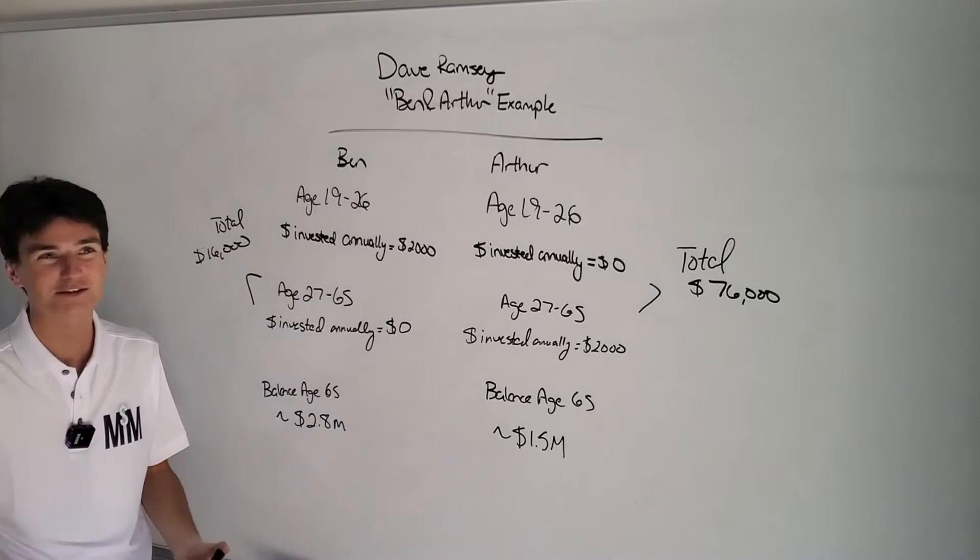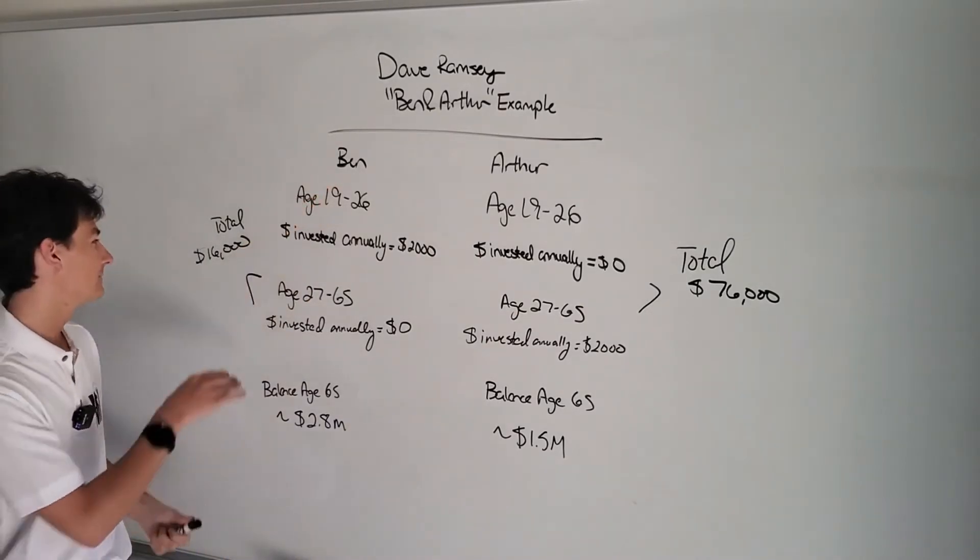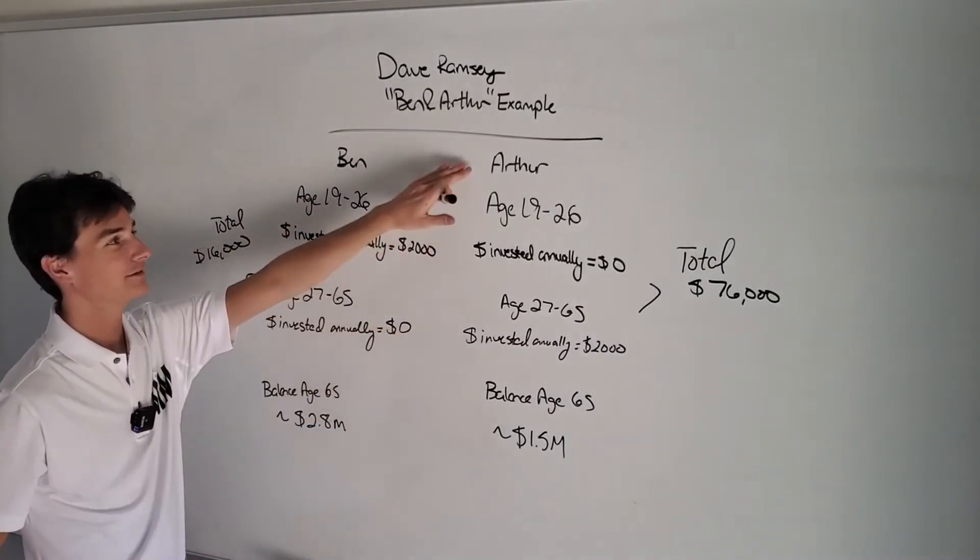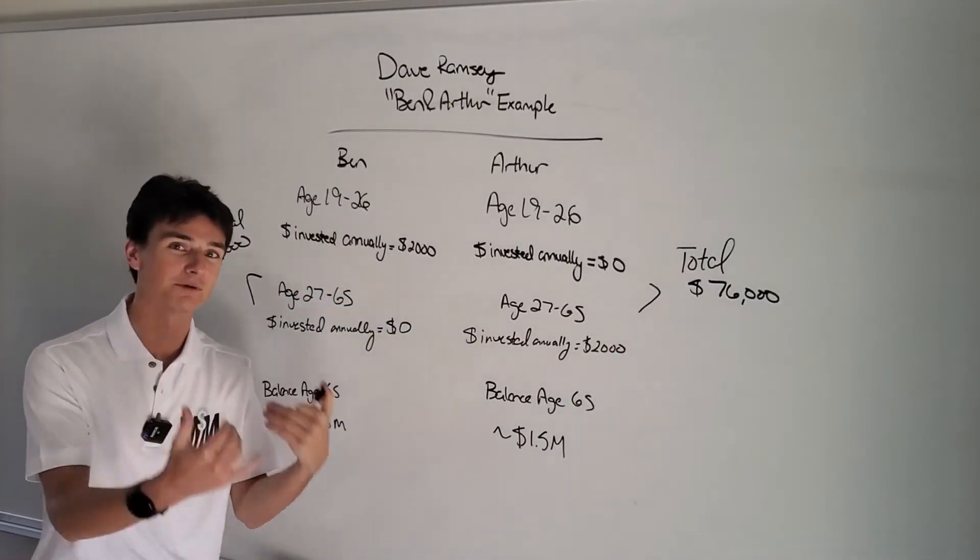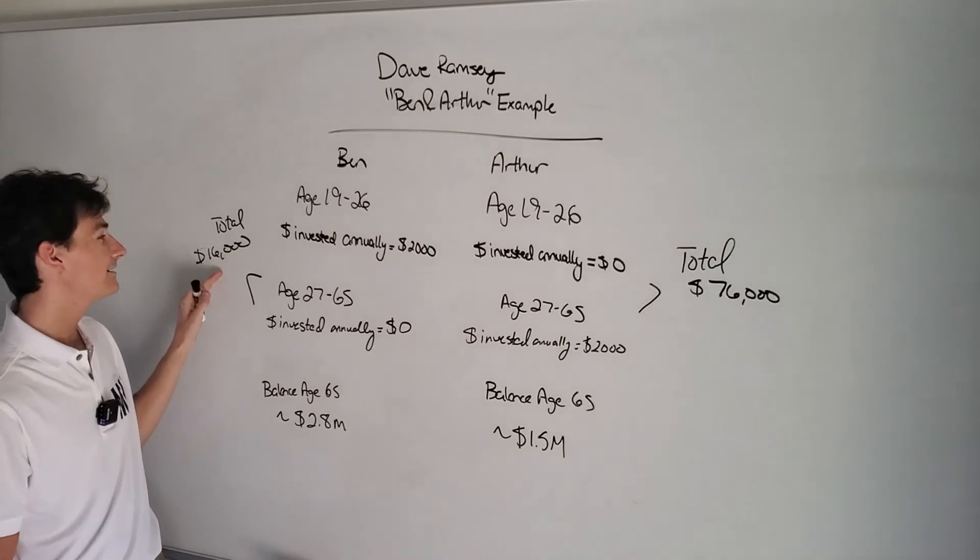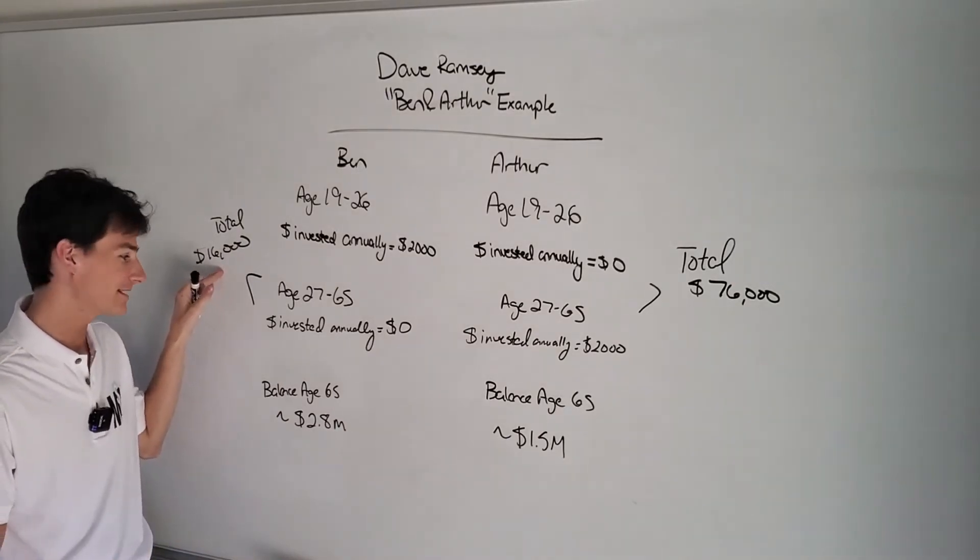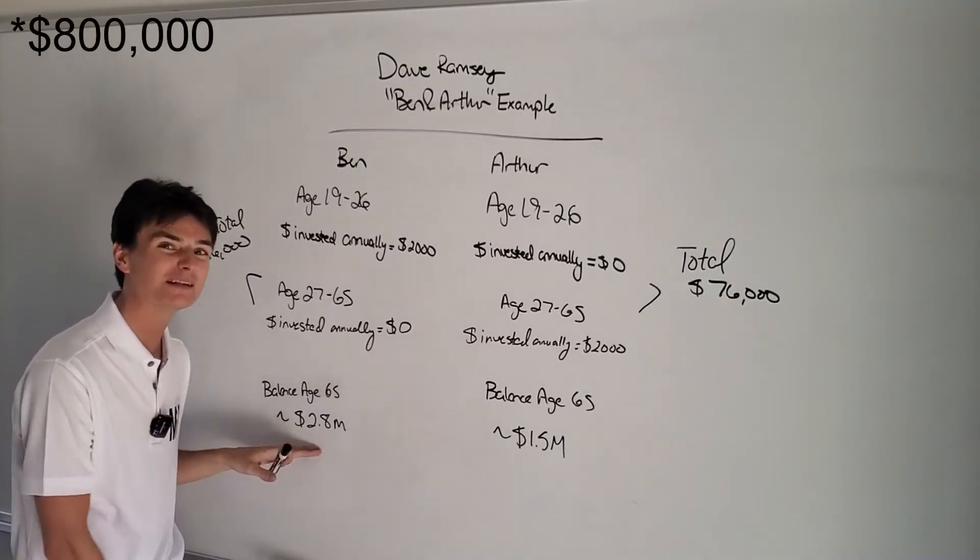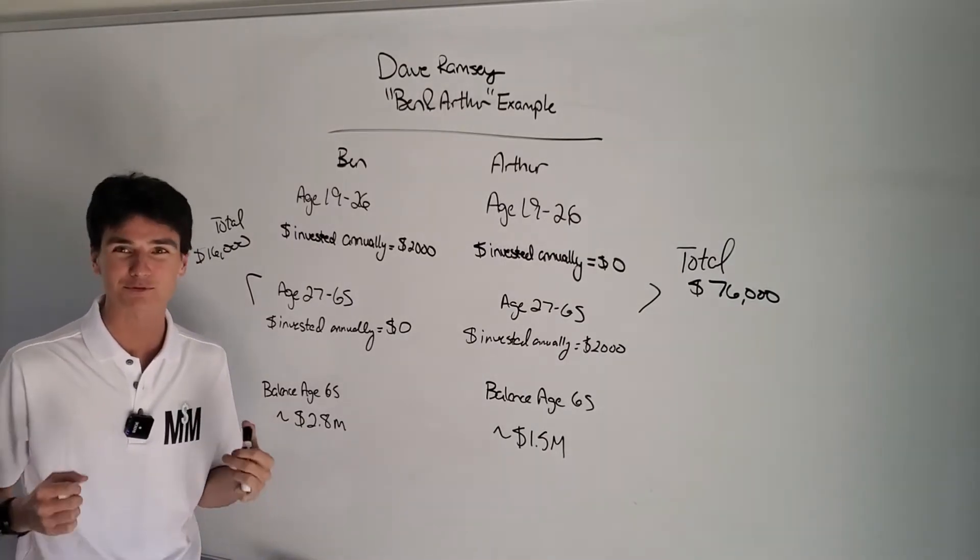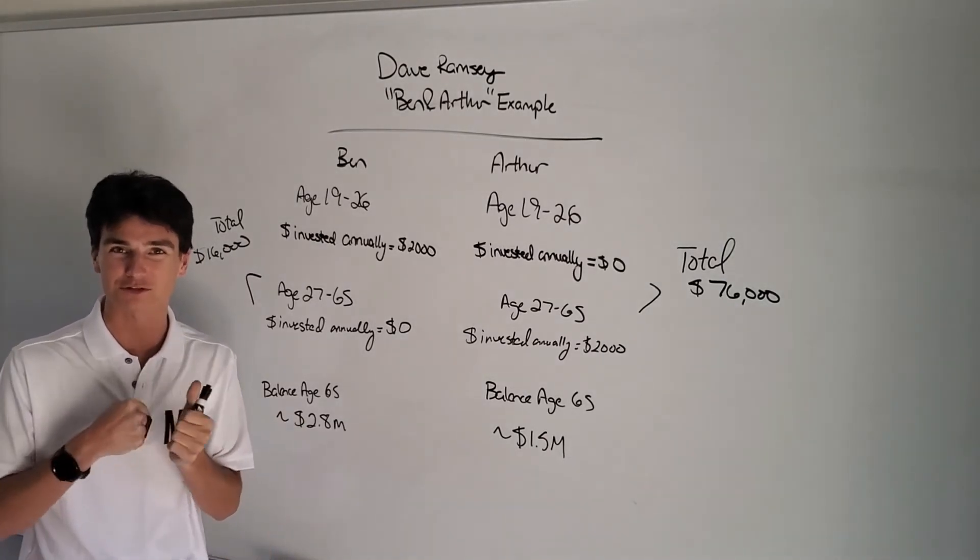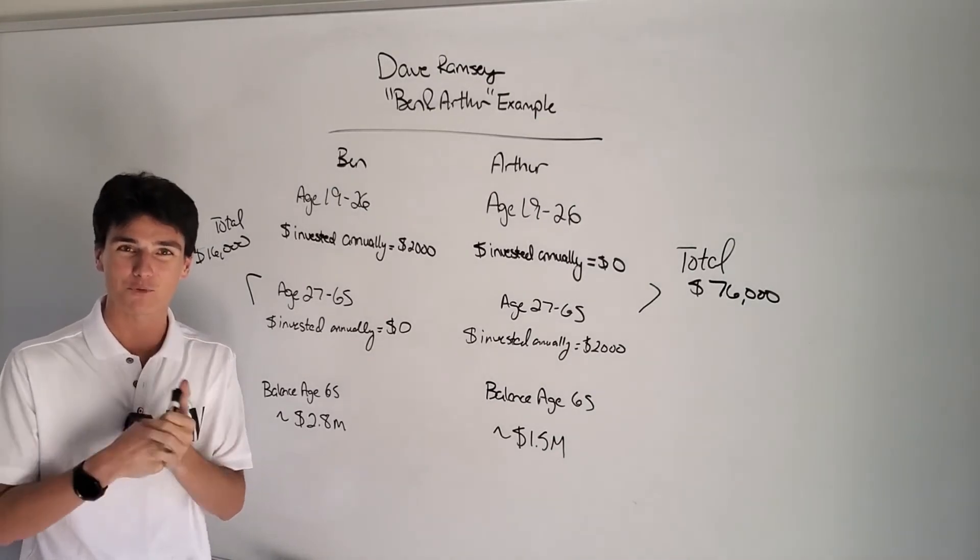So this is really crazy. Ben put in $16,000. Arthur put in $76,000. You're talking about over four times the amount of money he had to put in. Ben put in four times less the amount of money and has $1.3 million roughly more money. This is what's crazy. This is why in personal finance, it is very important to start early.